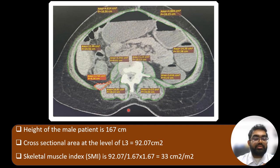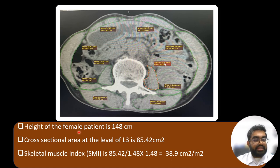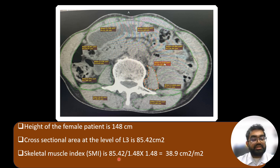Here is an example of a male patient of height 167 cm. The cross-sectional area at the level of L3 came out to be 92.07 cm², and the skeletal muscle index was calculated to be 33 cm²/m². In the second example, a female patient had a height of 148 cm. The cross-sectional area at L3 came out to be 85.42 cm², and the skeletal muscle index was calculated to be 38.9 cm²/m².